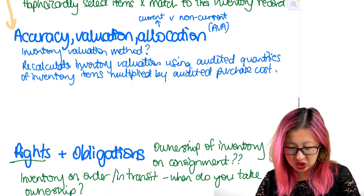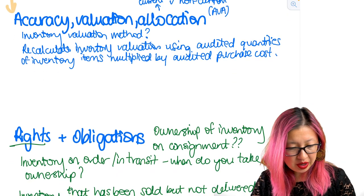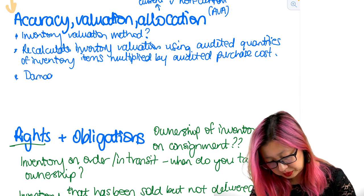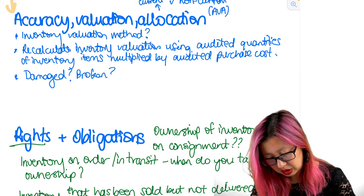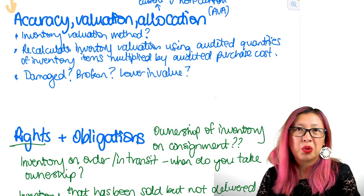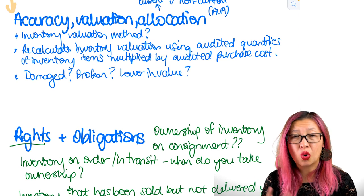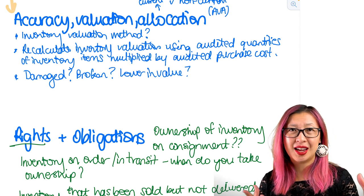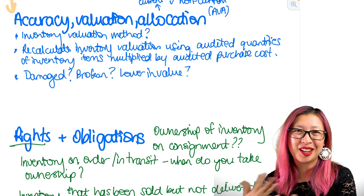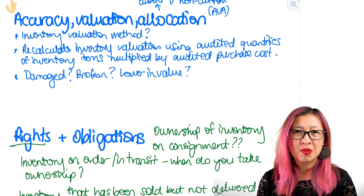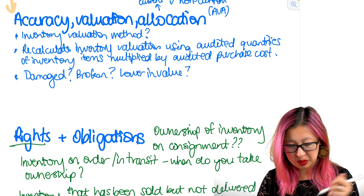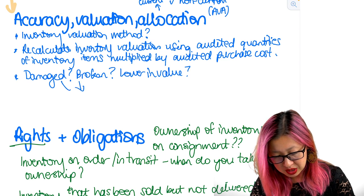Now there's a few other things that we need to do in terms of accuracy, valuation, and allocation. That is we need to find out is any inventory damaged? Is any inventory broken? Or is any inventory lower in value? Because remember we have to use the idea of lower of cost or net realizable value. So you need to look at these things and say if it's a fashion warehouse, is this particular product still in fashion? Can we still sell it? Can we still get the money for it? So with the damaged or the broken items that's going to come from a lot of observation. You look around, oh this item is supposed to be on the inventory list but I find that it's broken. That needs to be written off. So we need to make sure that damaged and broken inventory is written off.